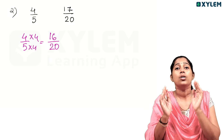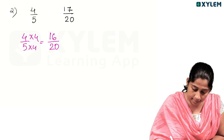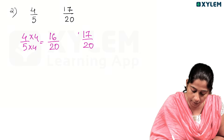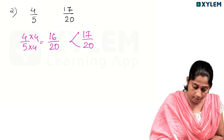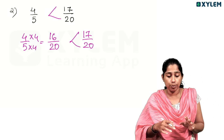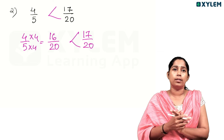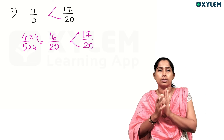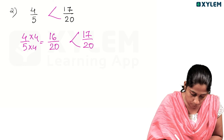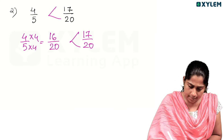The denominator is 20. We have 18 by 20, 16 by 20, and 17 by 20. Now the denominators are the same, so we compare the numerators. 4 by 5 equals 16 by 20 and 17 by 20. It's easy to compare by looking at the numerators.